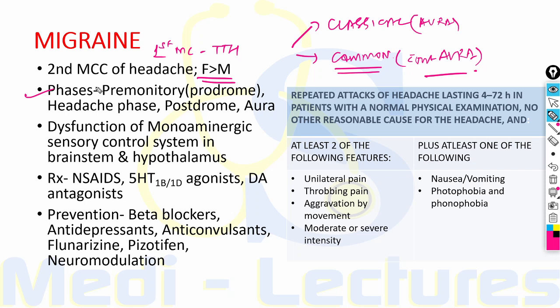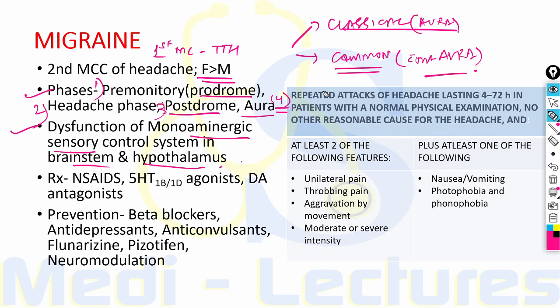Migraine usually has three phases: premonitory phase or prodrome, headache phase, and postdrome. In some patients — 20 to 25 percent — there is a fourth phase known as aura, which makes it classical migraine. The pathophysiology lies in the dysfunction of the monoaminergic sensory control system in the brainstem and hypothalamus. For diagnosis, there should be repeated attacks of headache lasting 4 to 72 hours in patients with normal physical examination and no other reasonable cause.